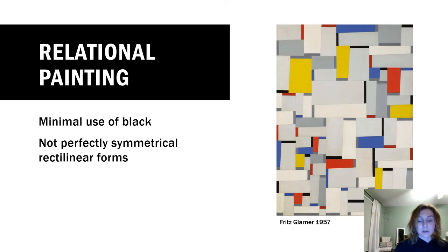I found this work by Fritz Glarner very interesting because it doesn't use a whole lot of black as we've seen in previous works. It's not perfectly symmetrical rectilinear forms—if you were to cut them in half, one end would be more narrow than the other. Also, this was created in 1957, so though it's in the De Stijl style, it's actually quite later than when the De Stijl movement was occurring.